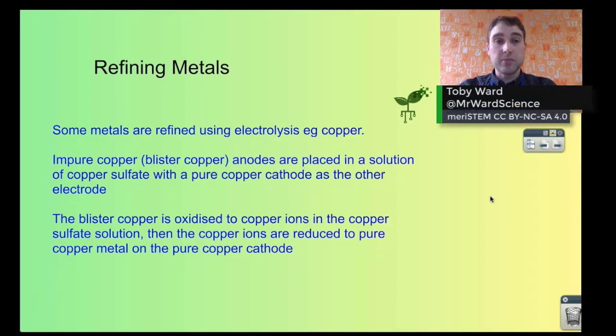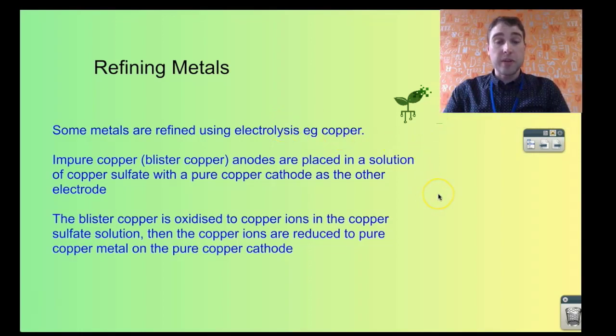We'll go through a bit more detail of how we can refine other metals other than active metals. Copper is a good example of a metal that's refined using an electrolytic cell.